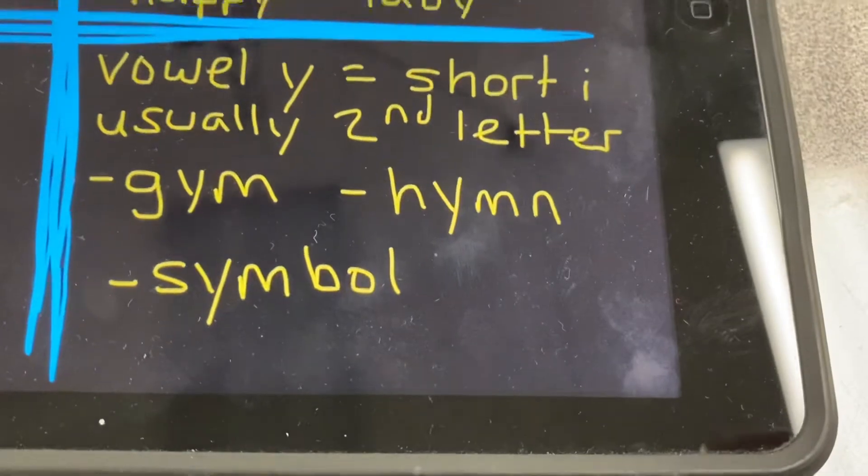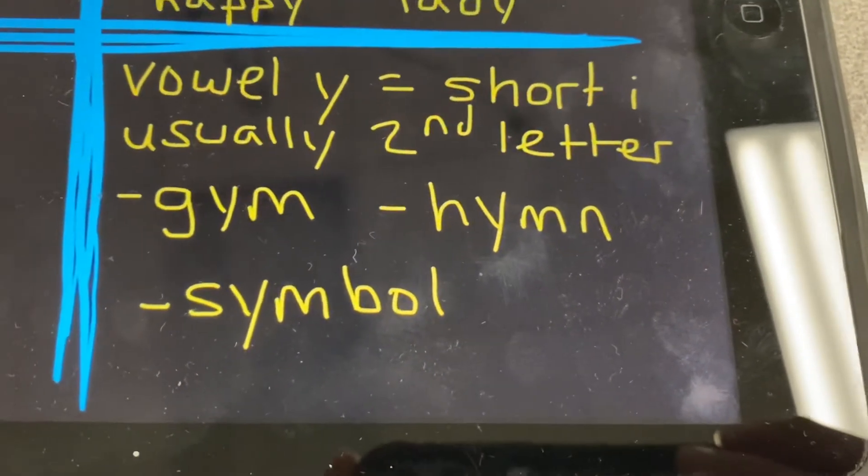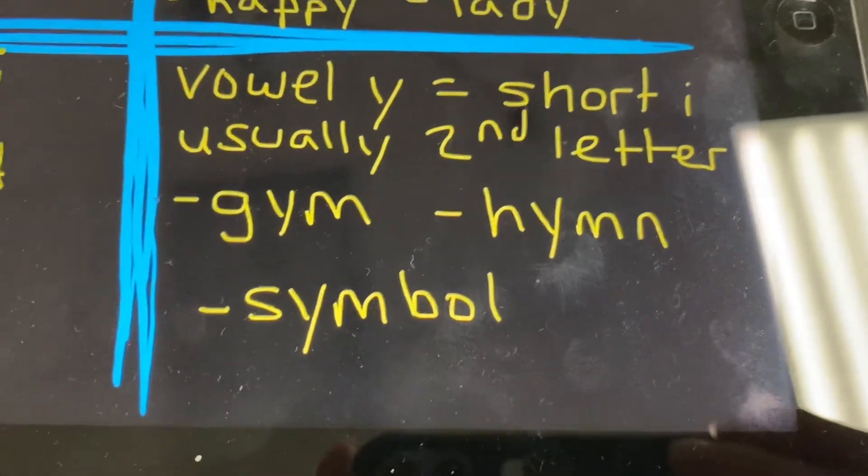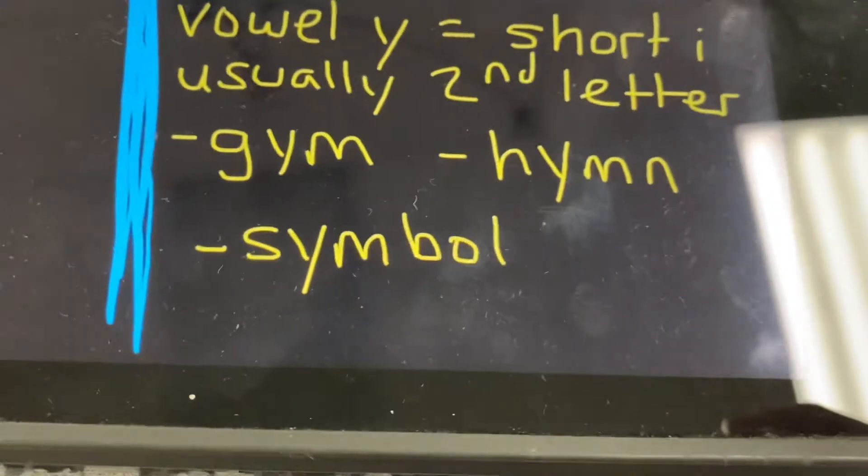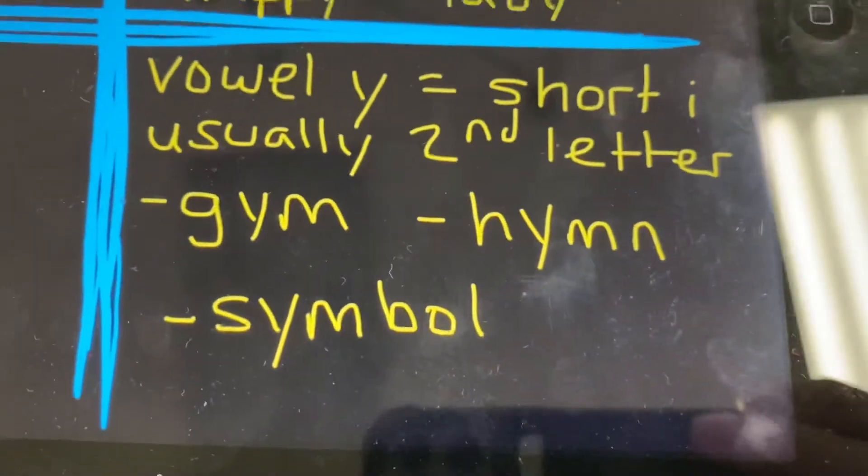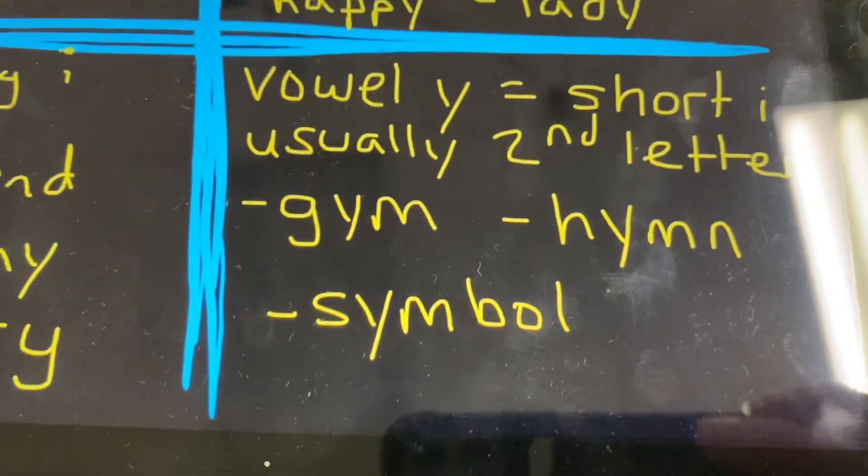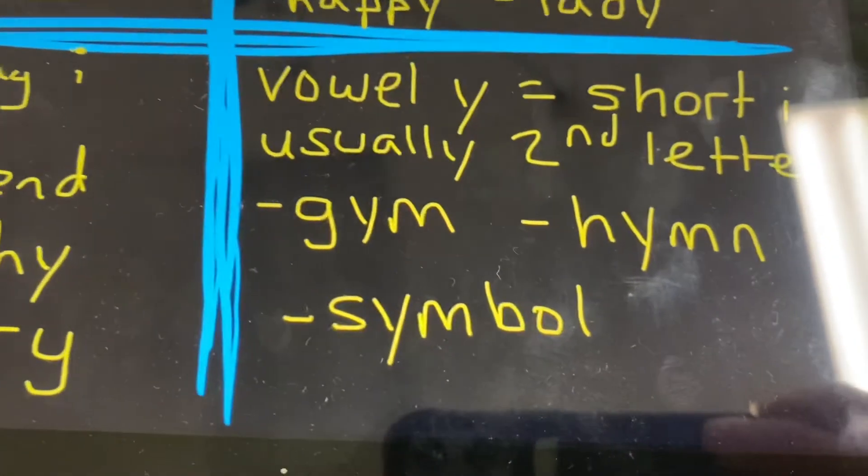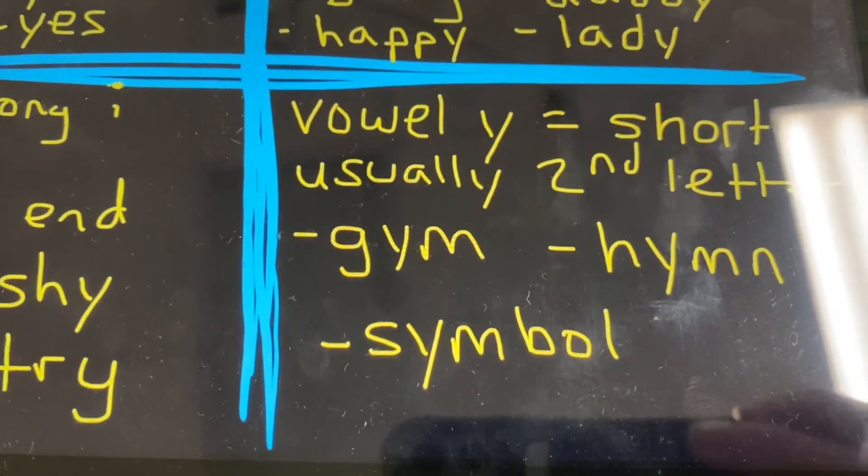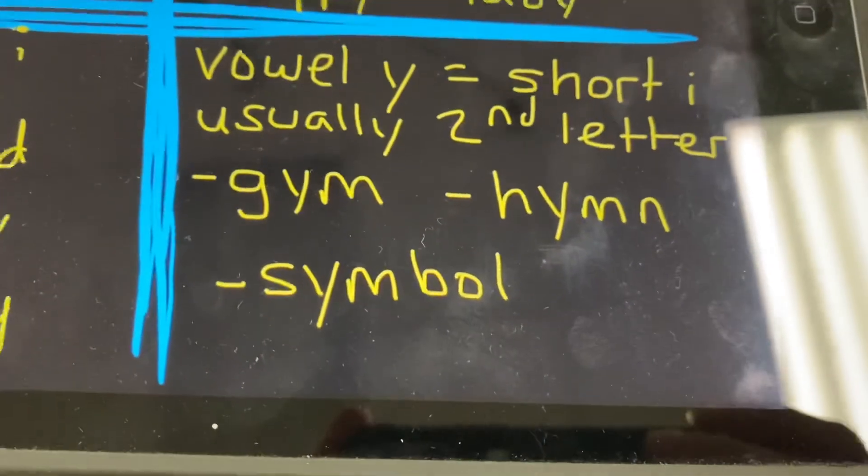Then, of course, we have vowel Y that says short I, the ih sound. It is usually the second letter or second sound of the word, such as gym, hymn, or symbol. You could also think about words that have a beginning sound that's together, like th, and those words with that Y next to it would be making the ih sound.